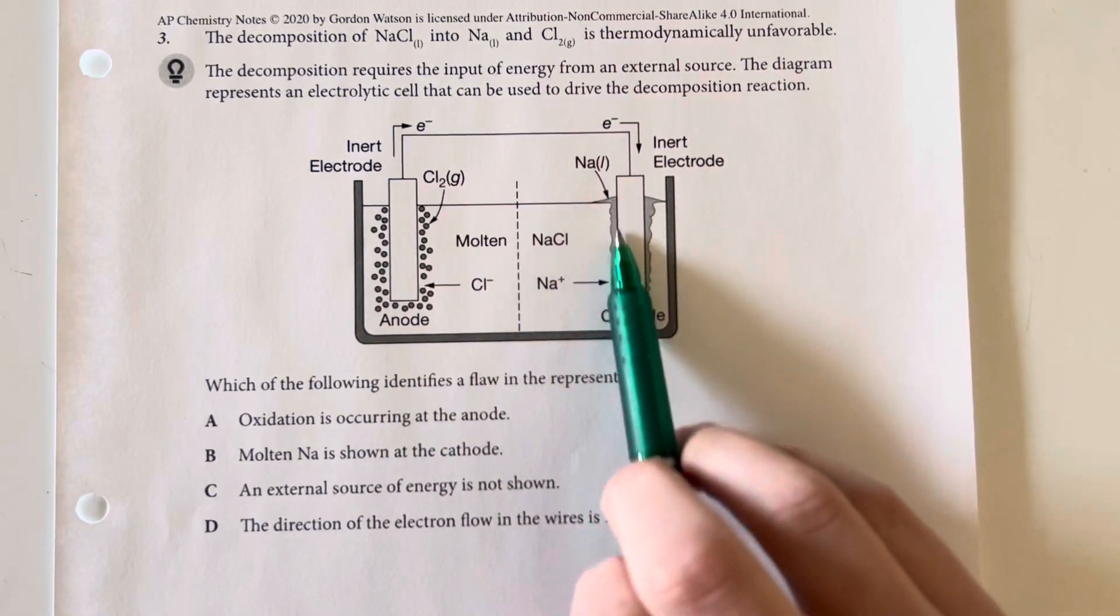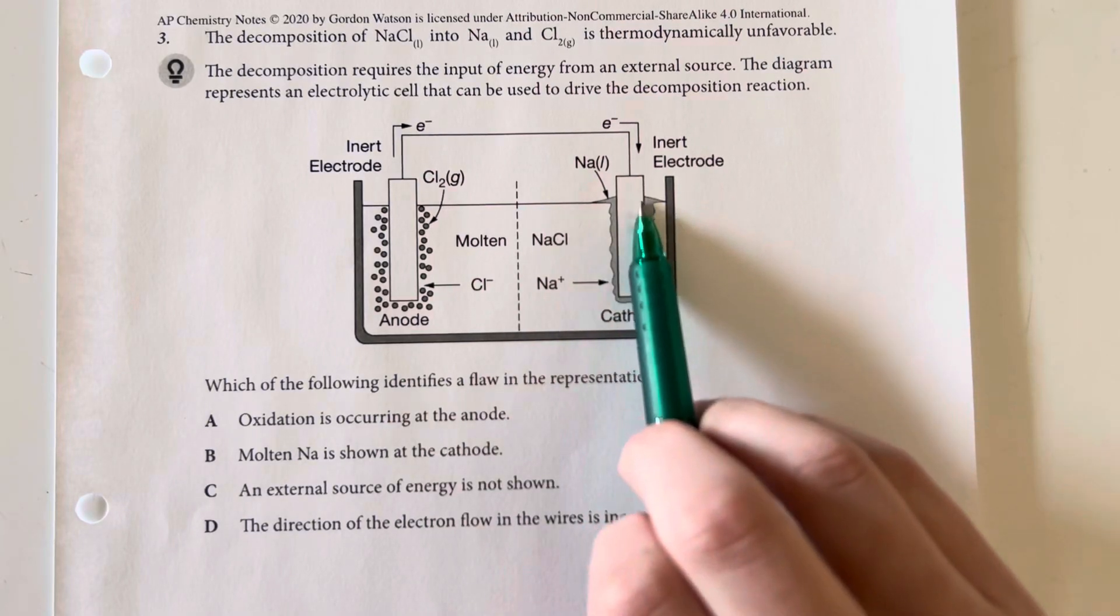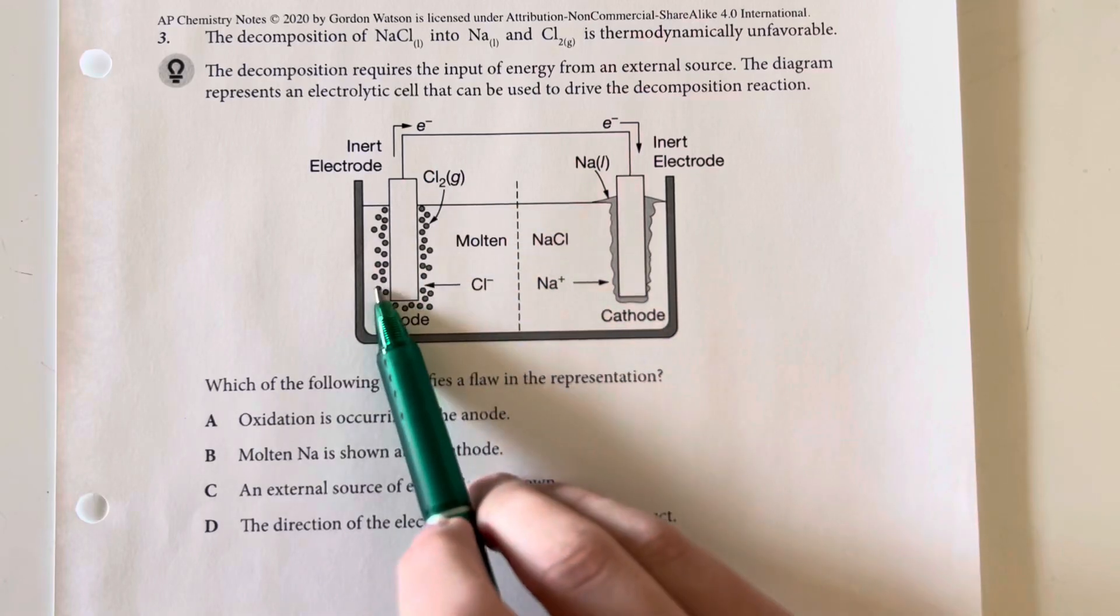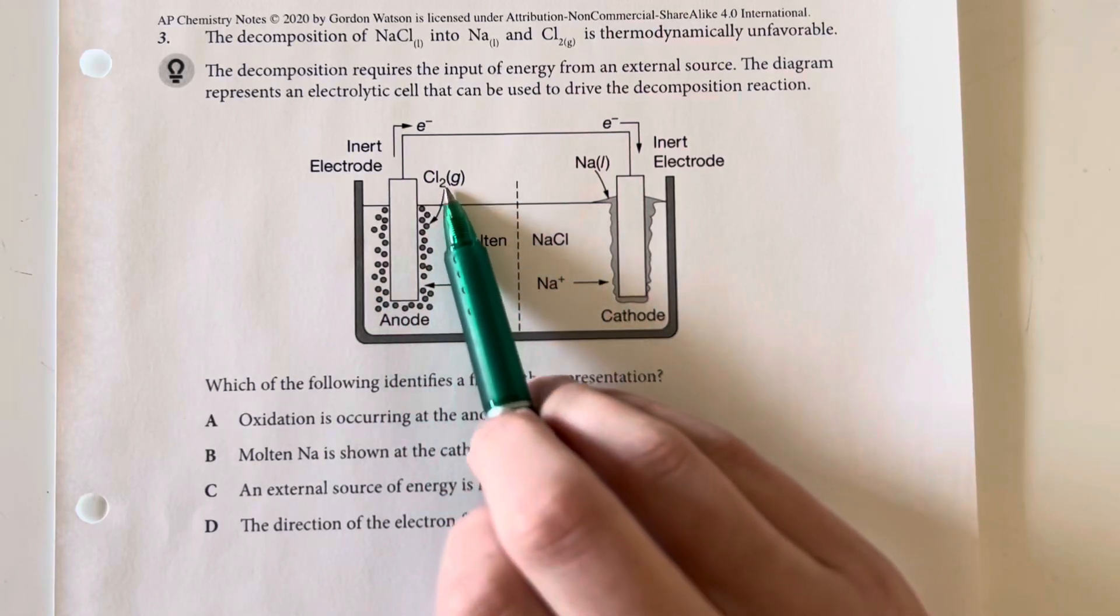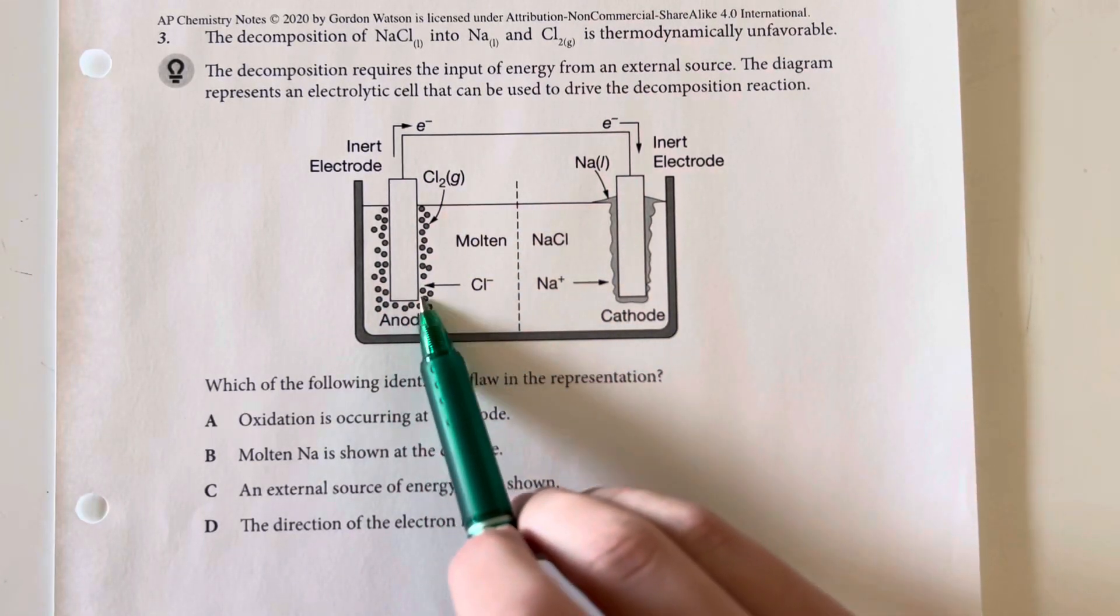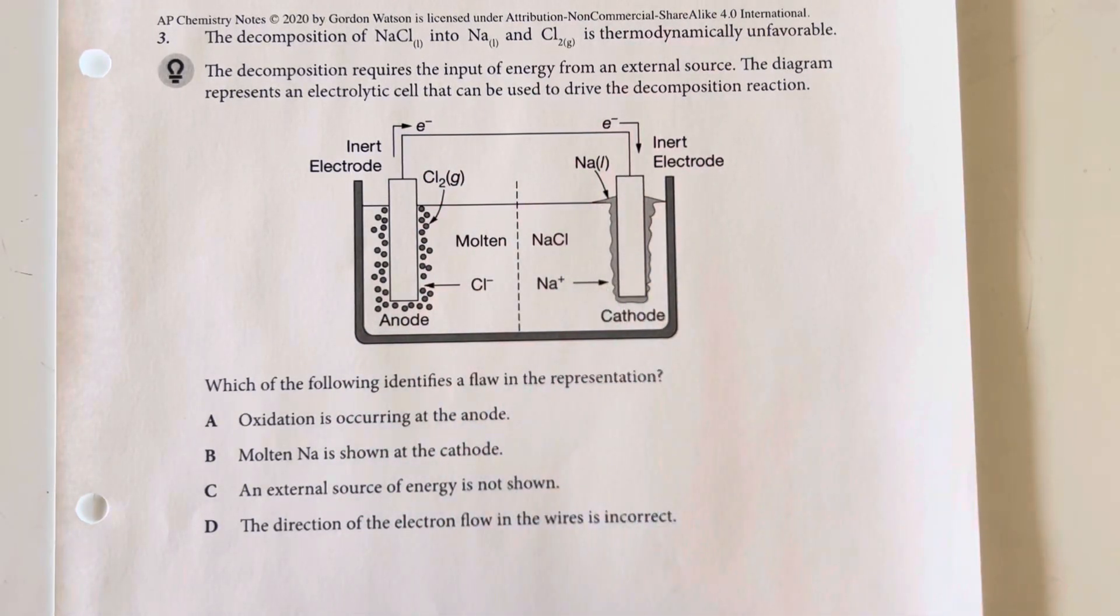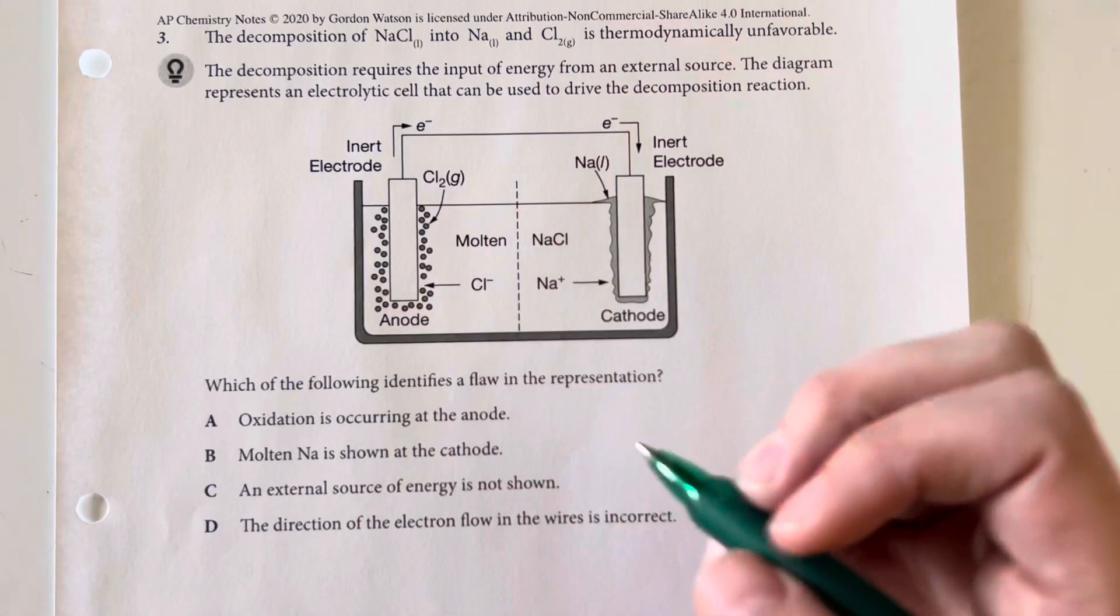We have our anode here, where we are going to be able to take away that extra electron to steal it to go ahead and give it to sodium.